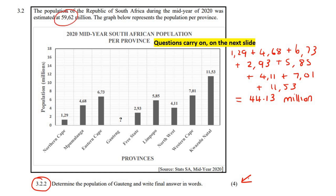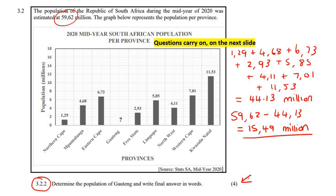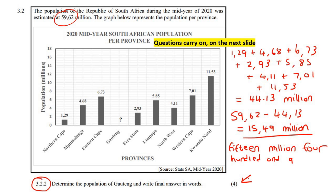So then you can say 59.62 and take away 44.13, and that gives you 15.49 million. They also say to write your final answer in words. So that is 15 million, 490,000 — fifteen million, four hundred and ninety thousand.